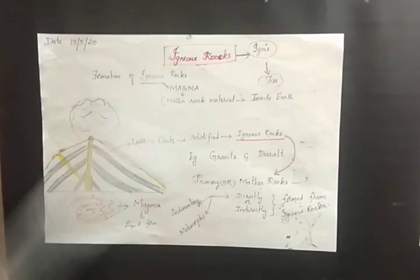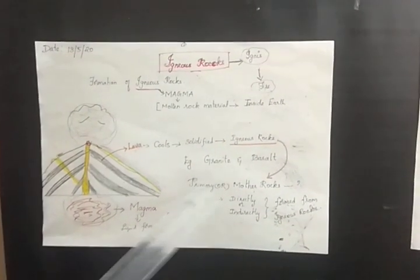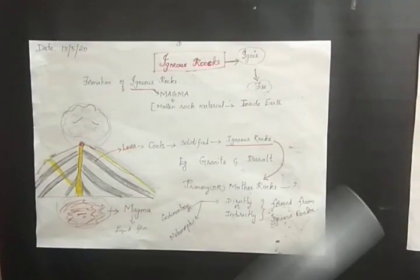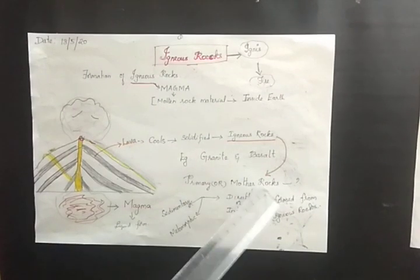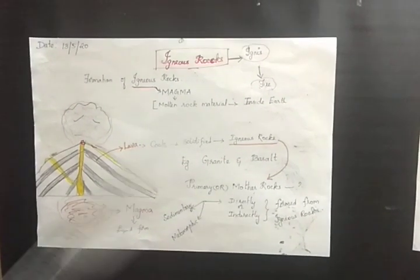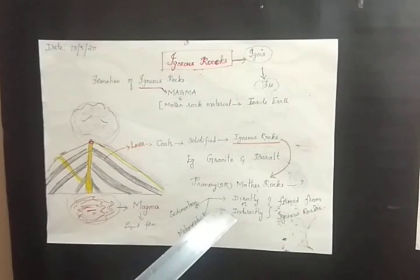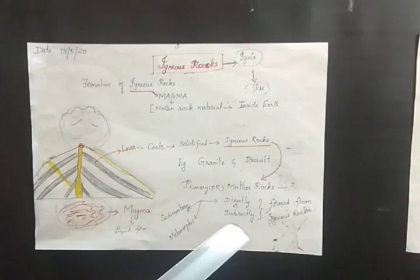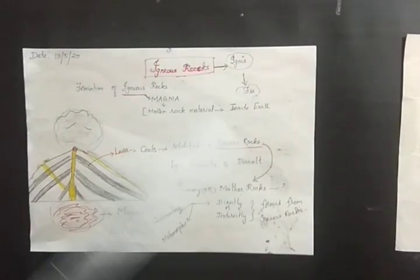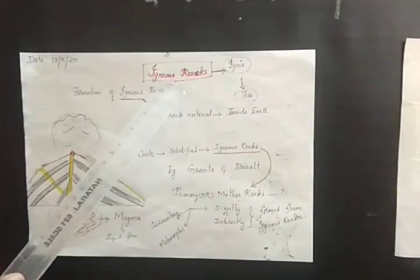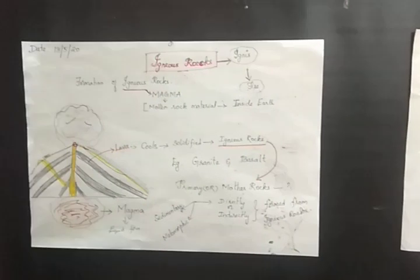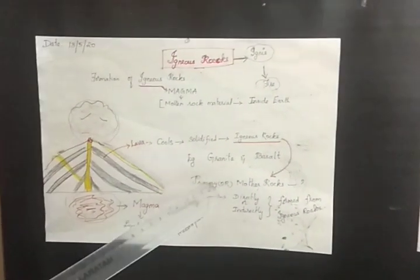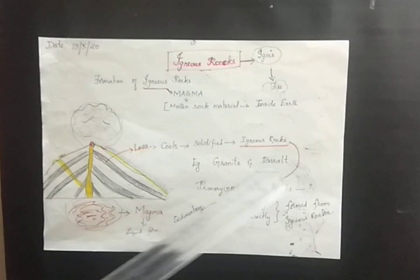This is an expected exam question: why are igneous rocks called primary and mother rocks? The answer is that sedimentary and metamorphic rocks are directly or indirectly formed from igneous rocks. The best examples of igneous rocks are granite and basalt.